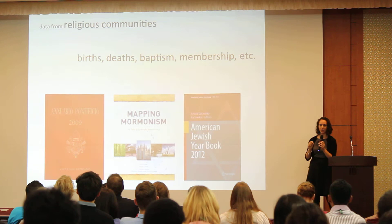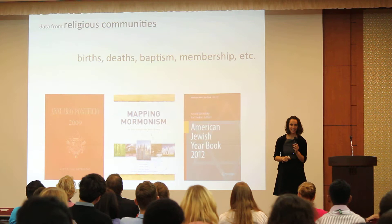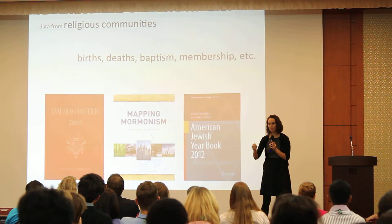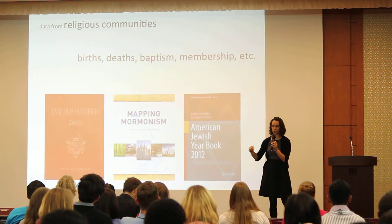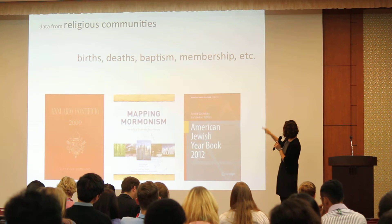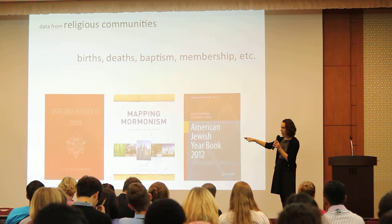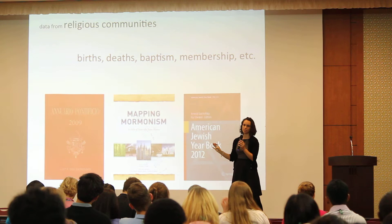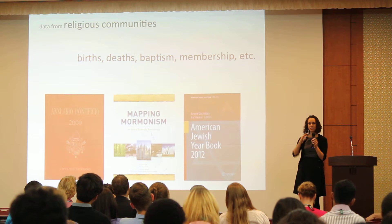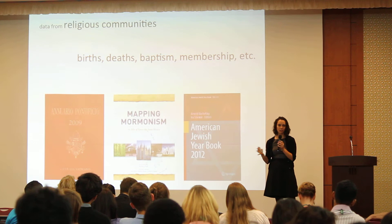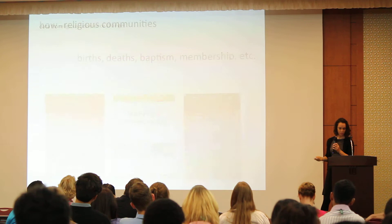Our center is unique in that we actually go to religious communities themselves and ask how many members they have. We go to organizations like the BCUSA research services arm and ask how many congregations they have and how many people are in them. We also read their publications — for example, the American Jewish Yearbook. We do religious demography for every religion in every country, from Afghanistan to Zimbabwe. We then reconcile all the data: the census says one thing, but the community says another — and we work out what's actually going on.